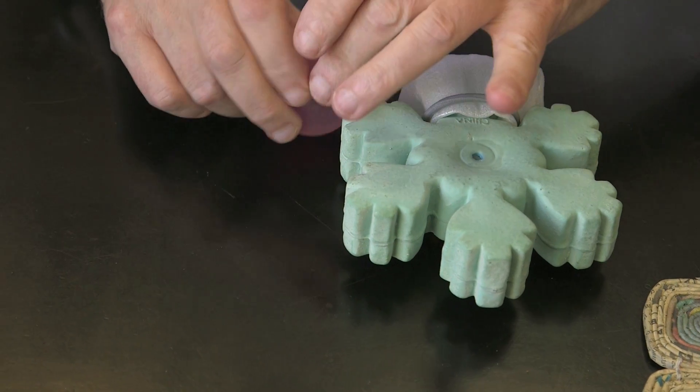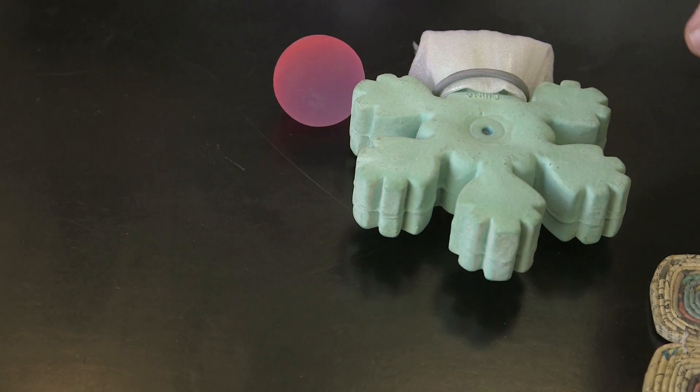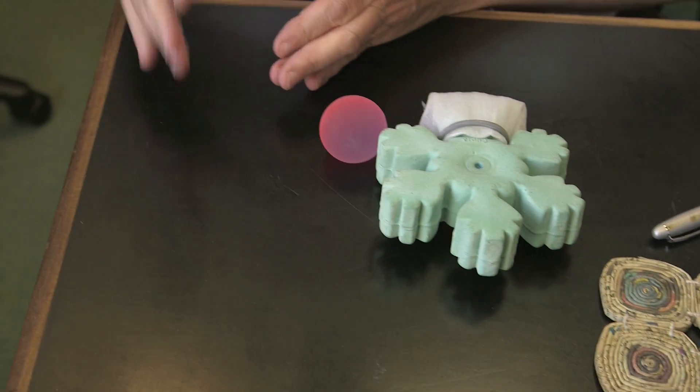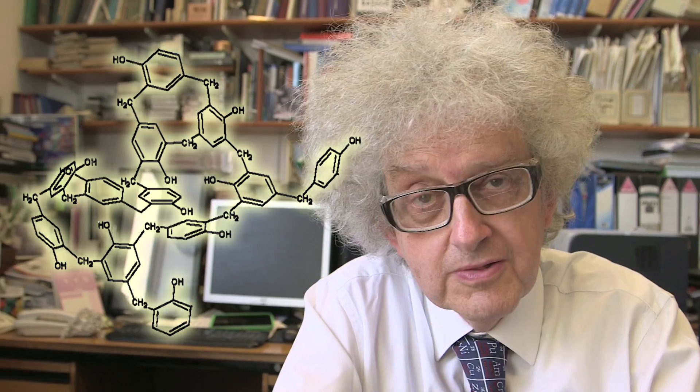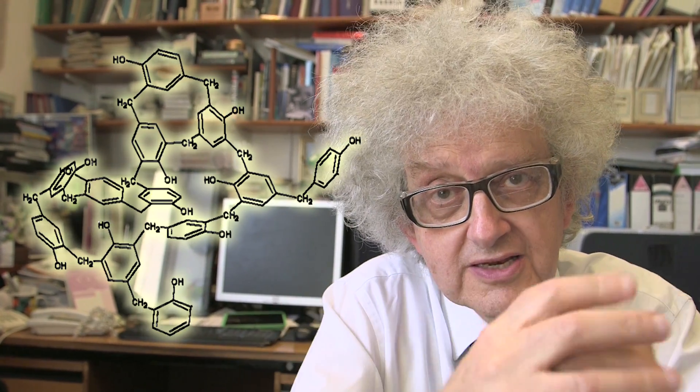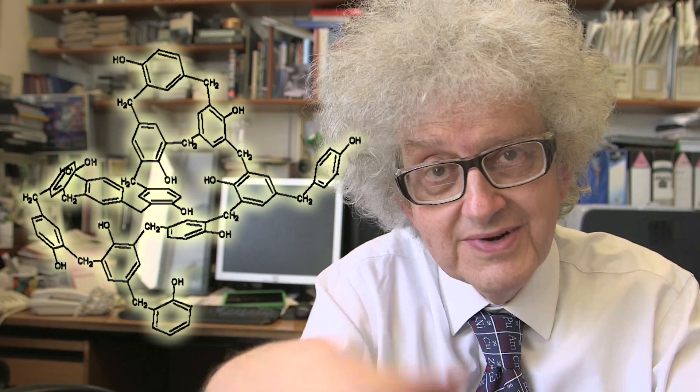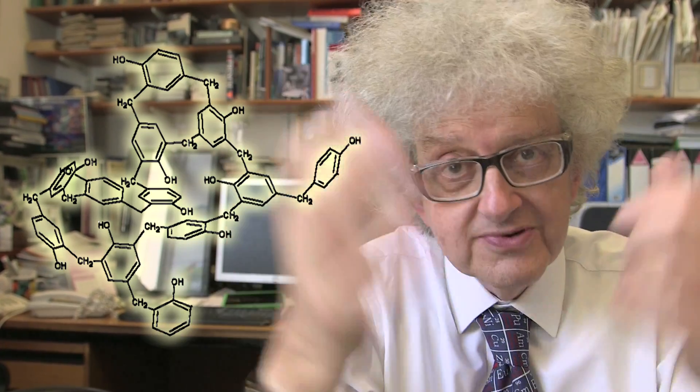And so essentially, it joins a whole series of these rings together. One formaldehyde goes in here, then you get another ring. And so you get a complicated network of these phenol molecules joined by CH2 groups. And if you look at the chemical structure written down, it quickly looks like my hair.